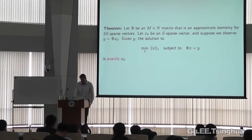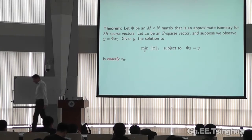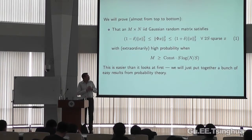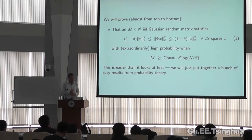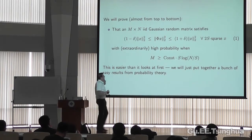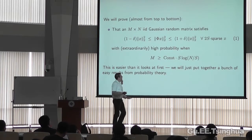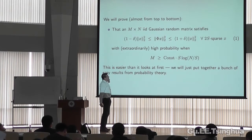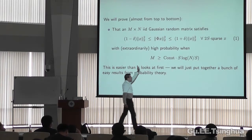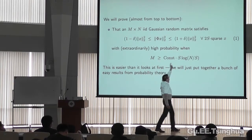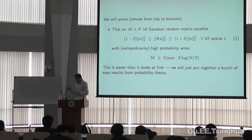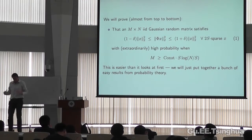So what we do today — that kind of leaves the natural question of: how do I know that a matrix phi has this property? That's what we're going to talk about today. Almost from top to bottom, we're going to establish another one of these foundational results: if I select the matrix at random by simply filling it with IID Gaussian random entries, then with high probability it's going to obey this restricted isometry property for all 2s sparse vectors when the number of rows is on the order of s times a logarithmic factor.